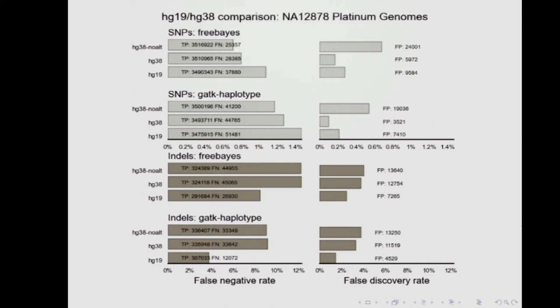The indels are more complicated, as they always are. The HG19 has fewer false negatives, but it also has fewer total indels detected. With build 38 you're detecting more indels — HG38 has about 324,000 versus 291,000 for hg19. So the target is bigger and we're detecting more, but we're not as good yet at detecting all the new targets. We're probably at the beginning of getting our callers working well on build 38 and detecting all the new indels. That's the case for both FreeBayes and GATK HaplotypeCaller. You're also a little worse on false discovery rate for indels.